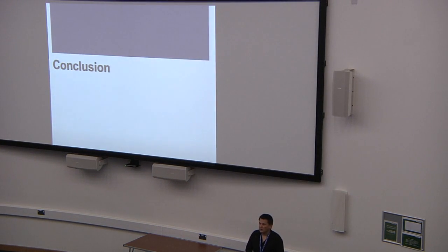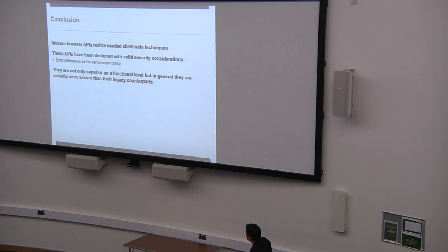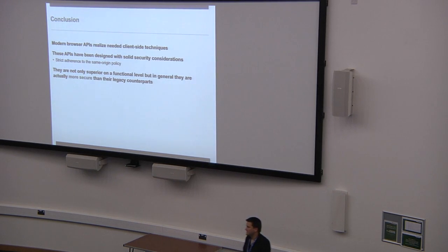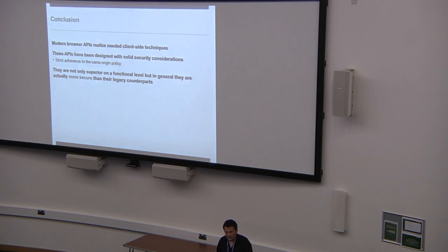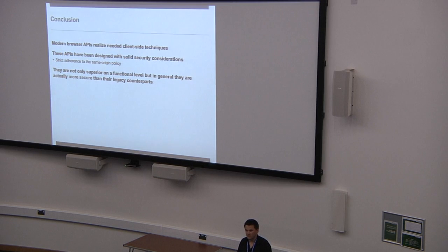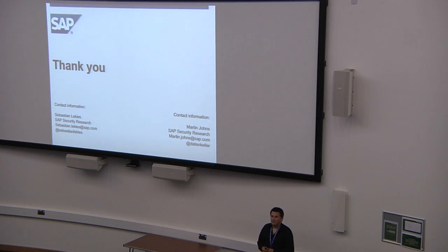In conclusion: modern browser features are not there for fun — they exist for a reason. Somebody thought about them and there were developer needs that preceded them. These modern browser APIs were introduced to realize certain use cases already realized before, but with a much better security model in mind. The JavaScript hacks and workarounds we saw have no security model at all — at least Flash has one, but it's also not very good. These APIs are for the first time really designed with security in mind. They are not as bad as the preconception might suggest, and often they're even superior on a functional level — they can store more data or provide finer access control than legacy features. Thank you for your attention.